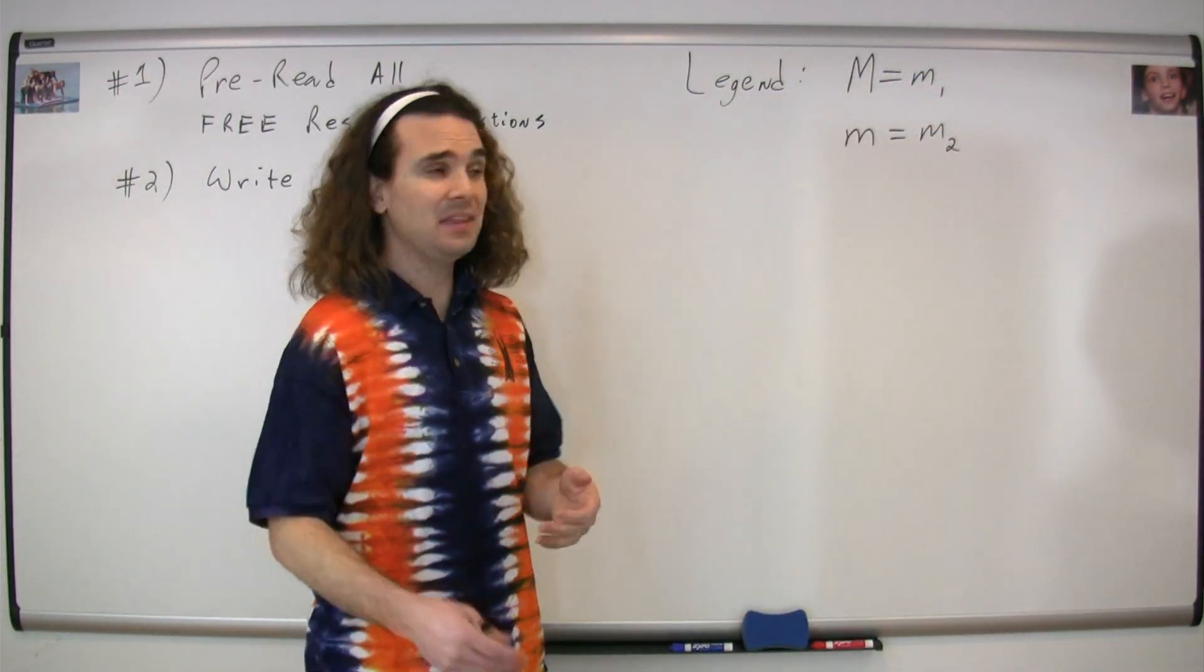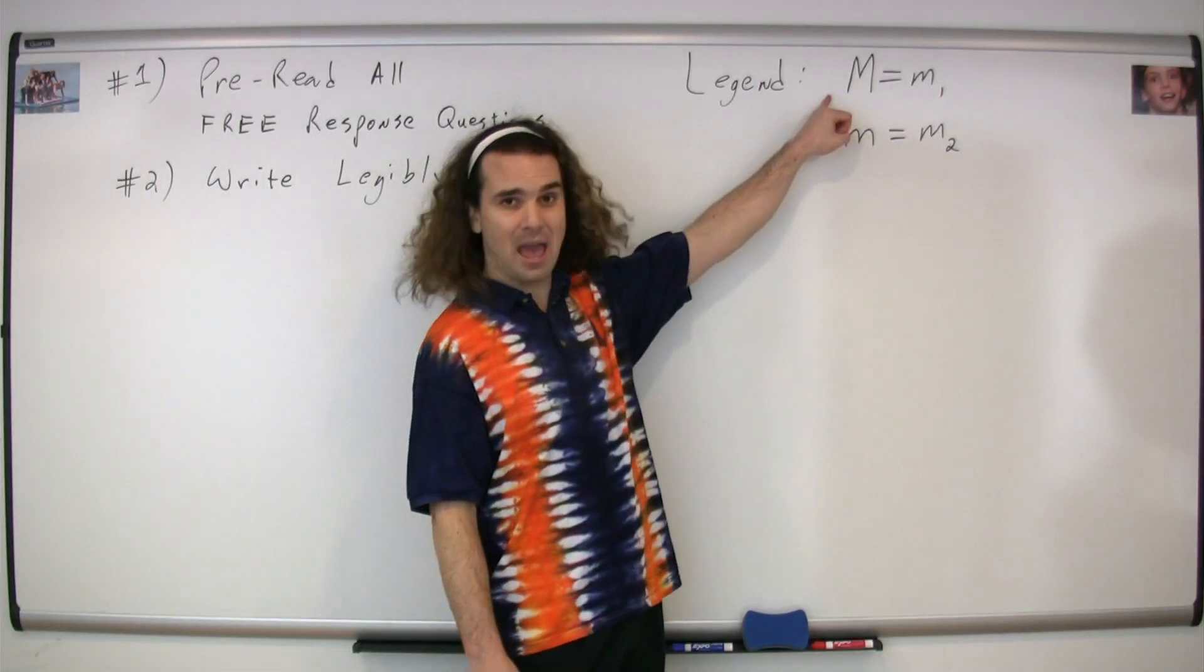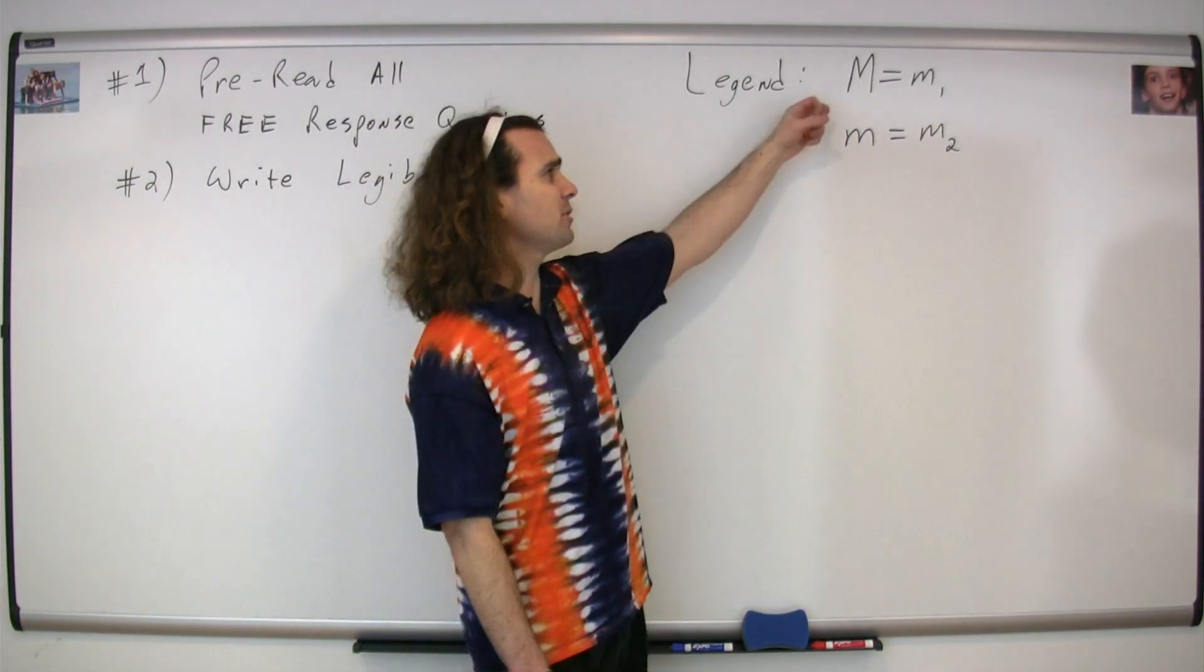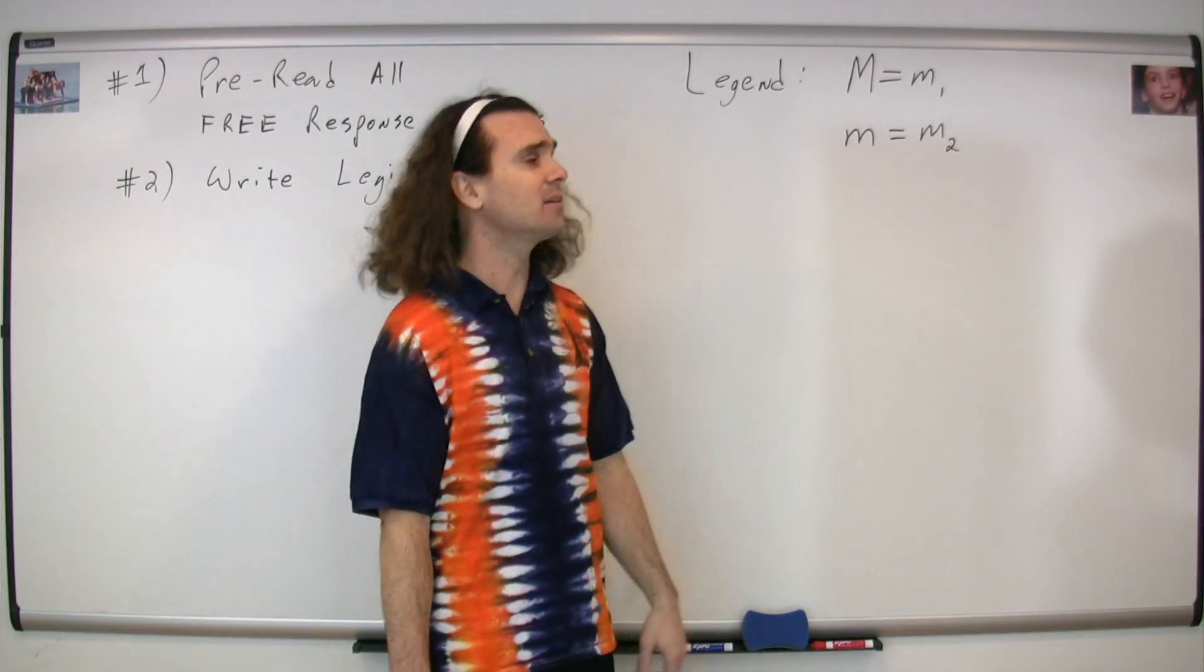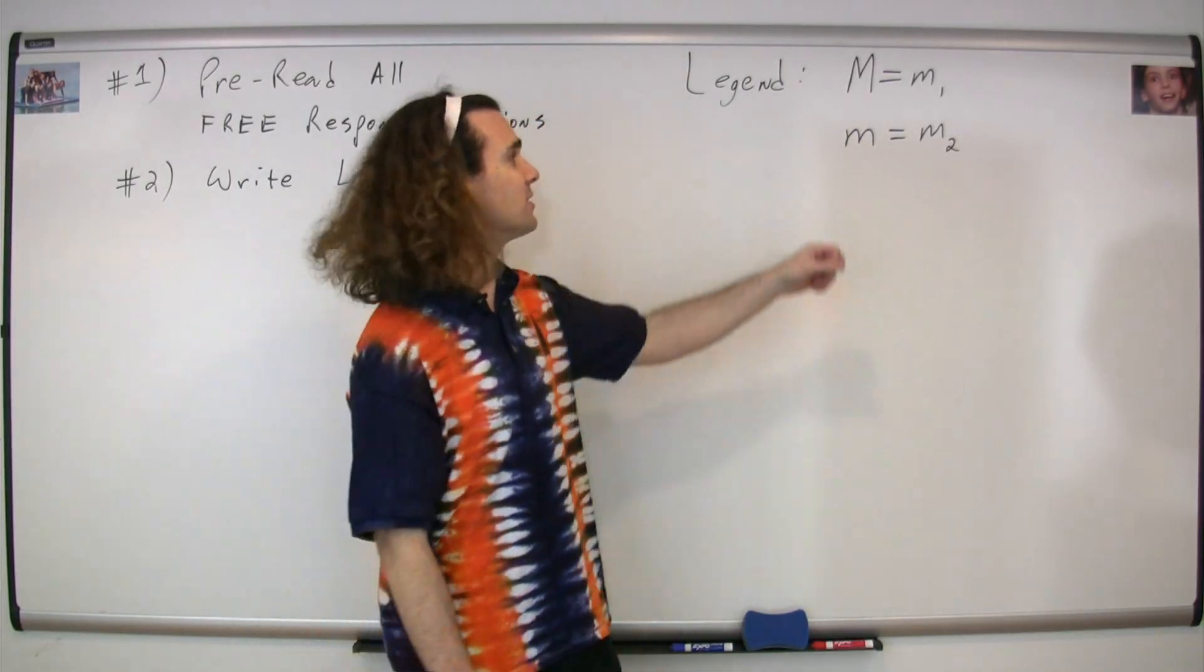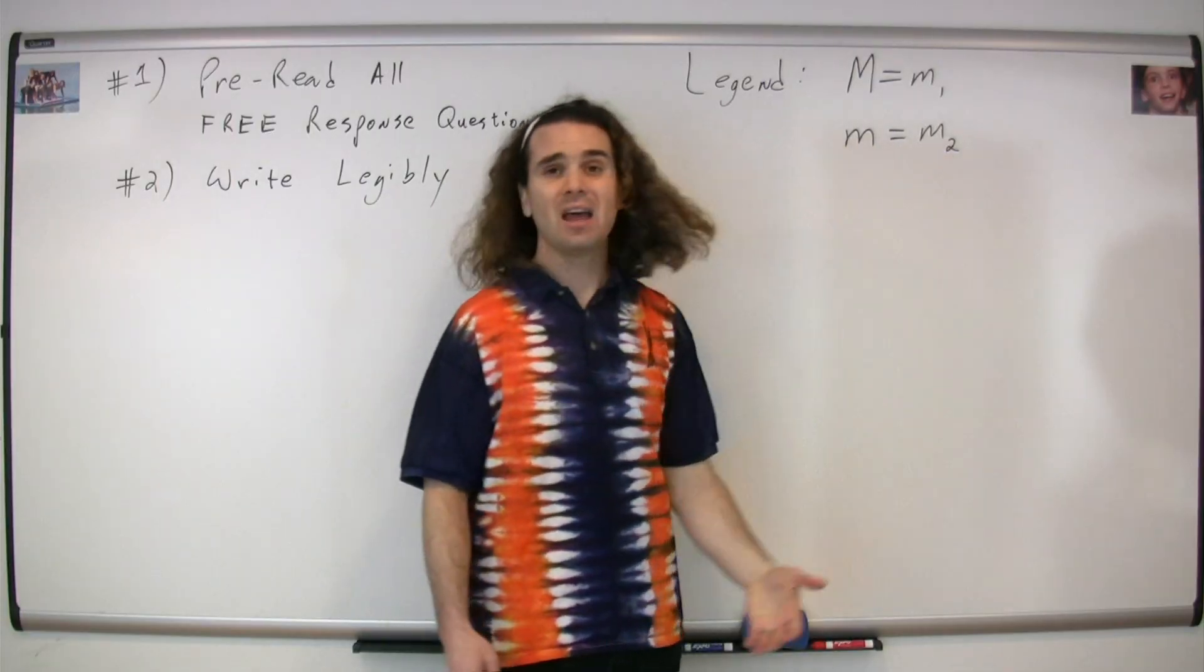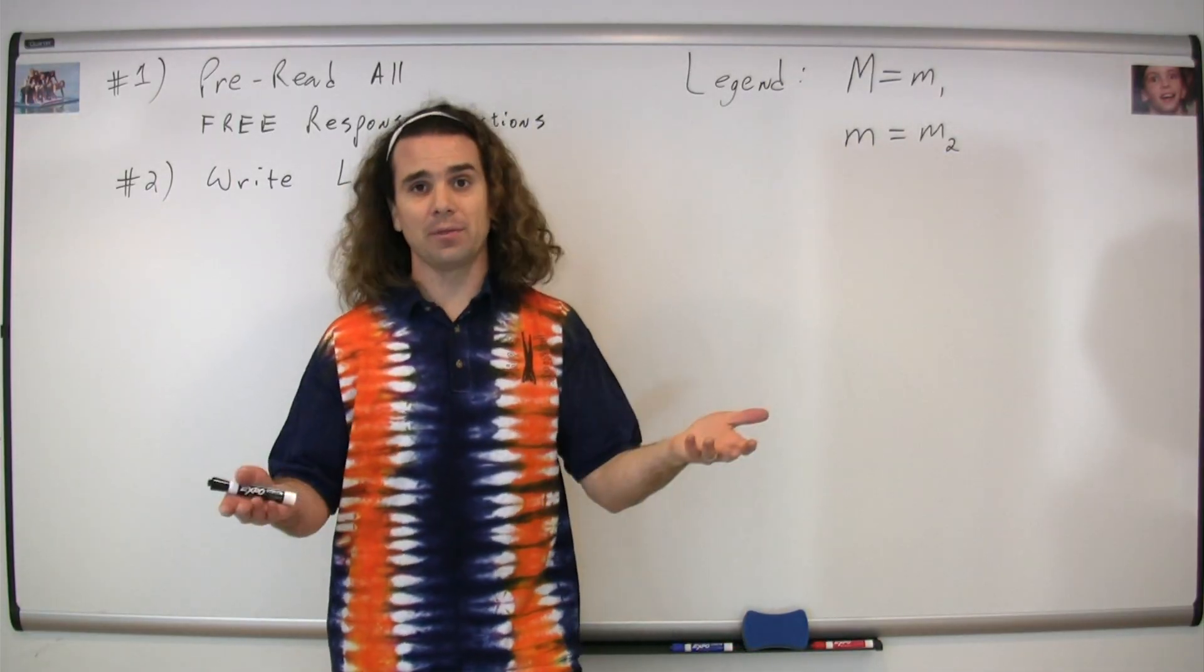For example, on the AP test, sometimes they use a capital M and a lowercase m to describe two different masses. I have a hard time distinguishing between a capital and a lowercase m when I write. Therefore, I would give them a legend that was capital M equals mass 1 and lowercase m equals mass 2, and then I'd use mass 1 and mass 2 throughout the problem.